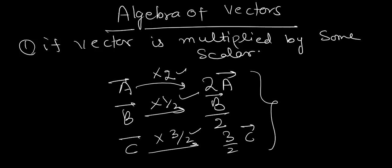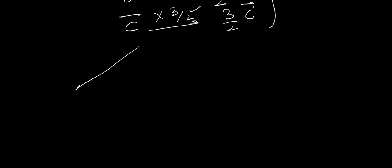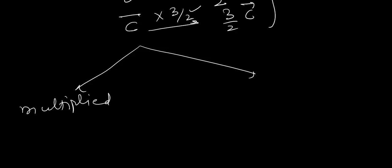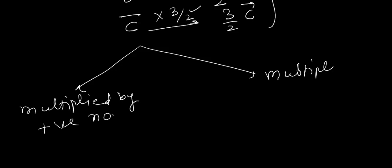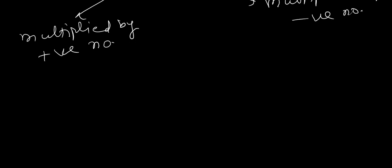So what is the difference between the resulting vectors? I have two cases: in one case I have multiplied by a positive number, and in the other case I have multiplied by a negative number.